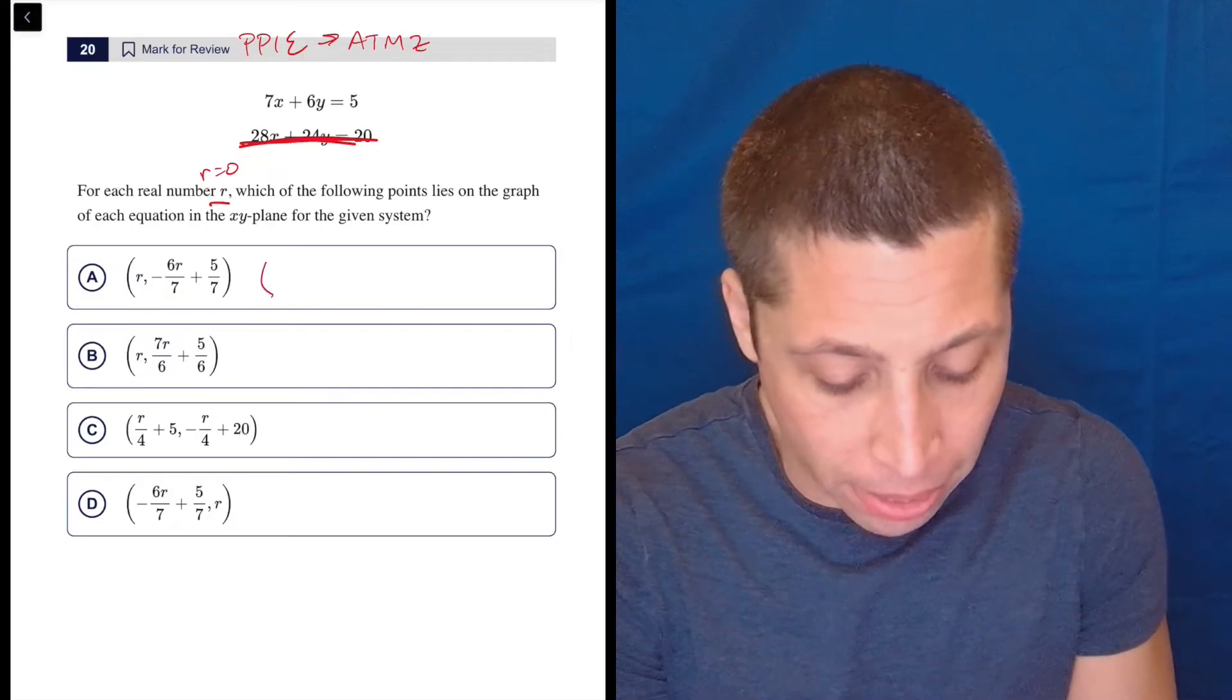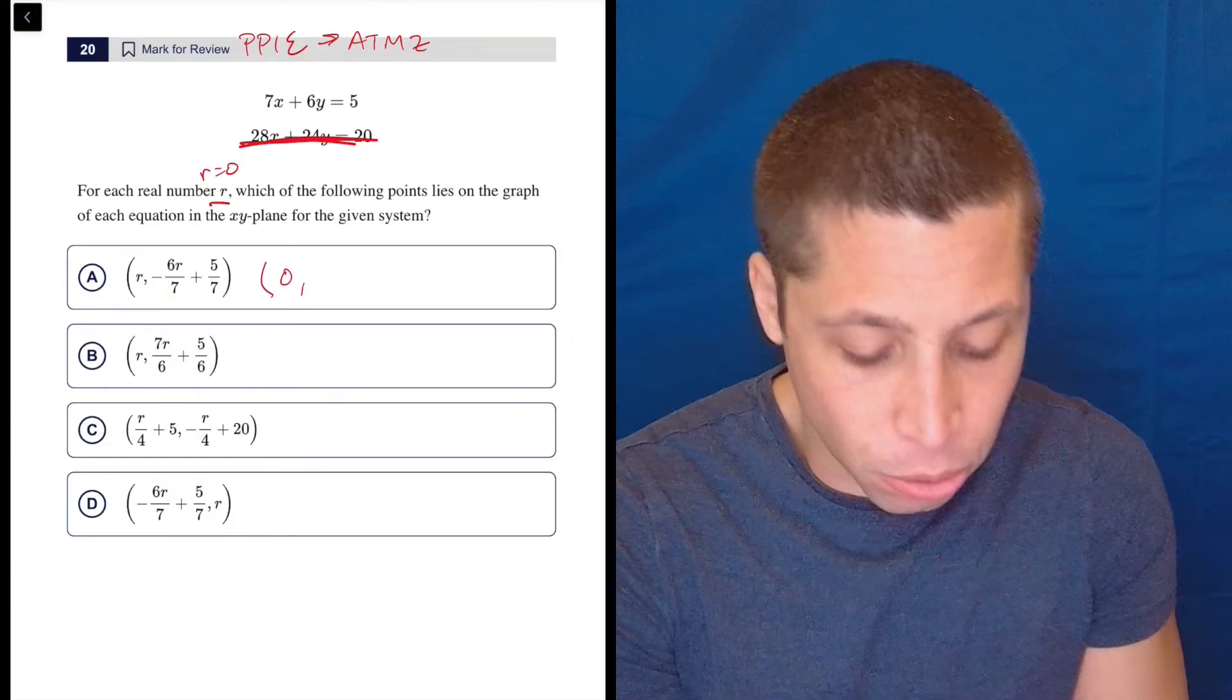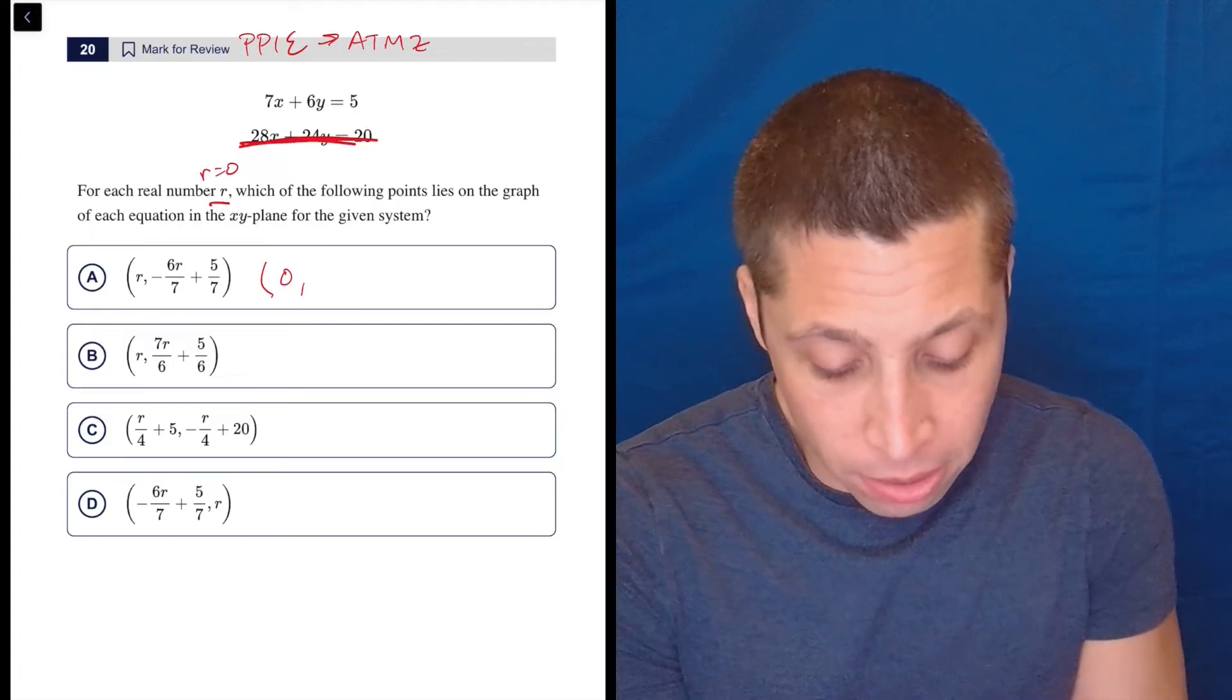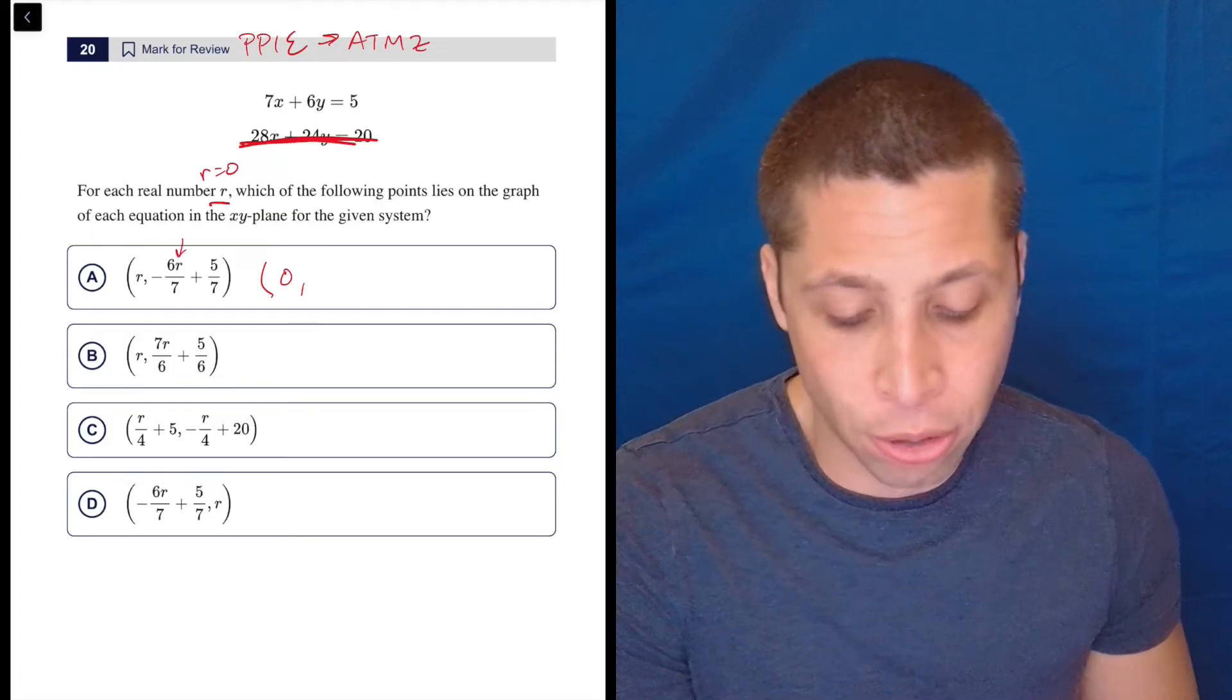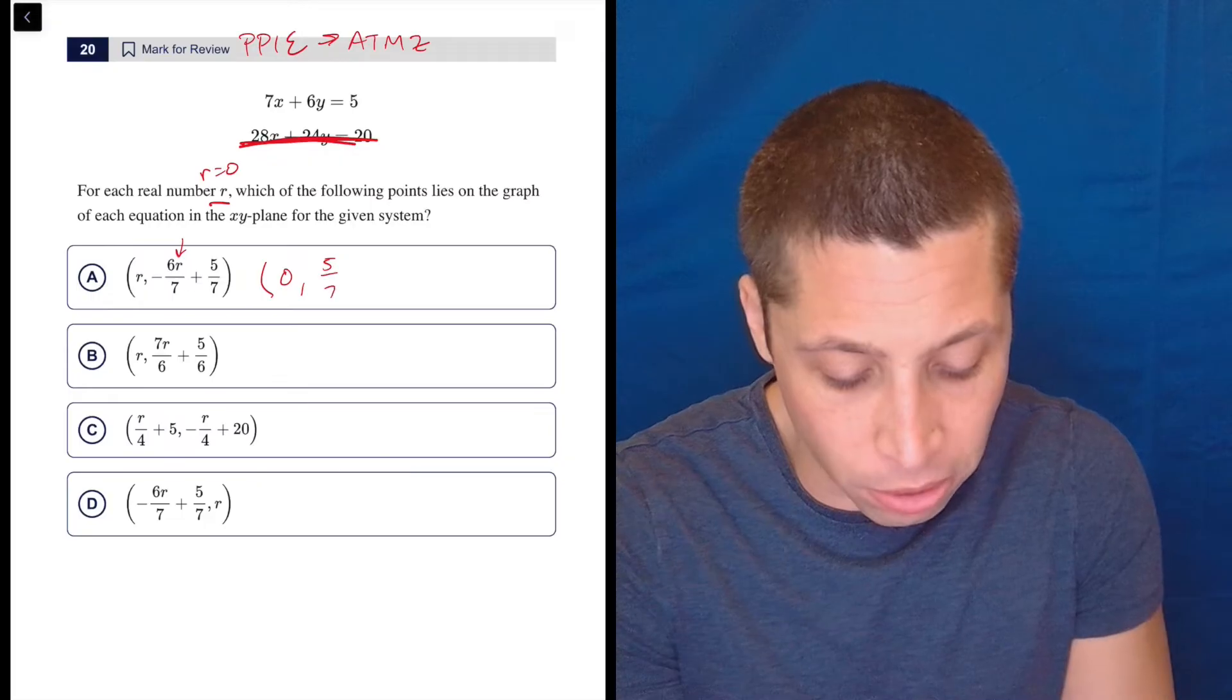So just to be clear what's happening, if I put 0 in, then the X-coordinate point is just 0 because 0 will knock out anything it's kind of attached to. So this is really the point 0, 5/7.